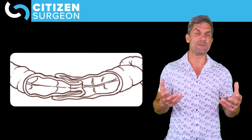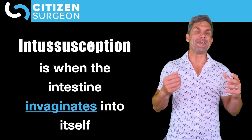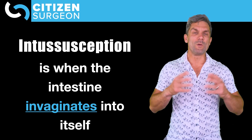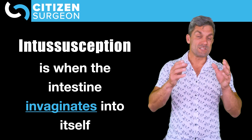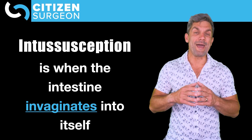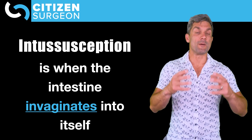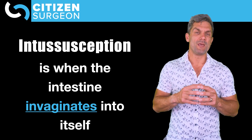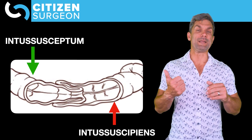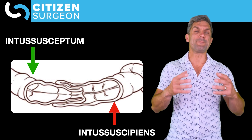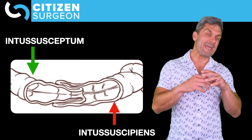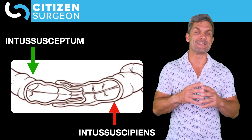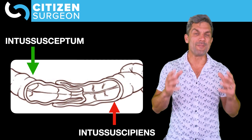Intussusception is when the intestine invaginates into itself. There are many different types: jejunal-jejunal, jejunal-ileal, ileal-colonic, and more. Two key words are the intussusceptum and the intussuscipians. The intussusceptum is the segment that invaginates into the intussuscipians — that's the receiving end. So the intussusceptum invaginates into the intussuscipians.